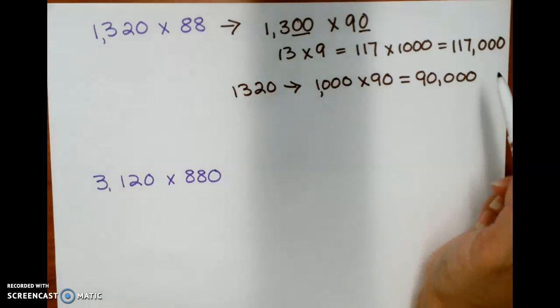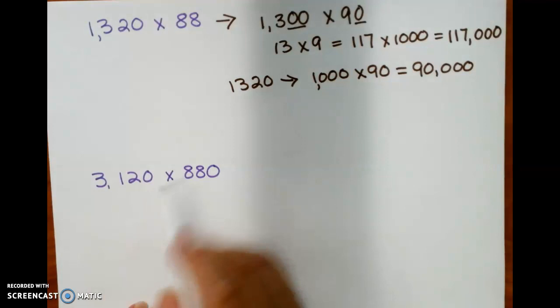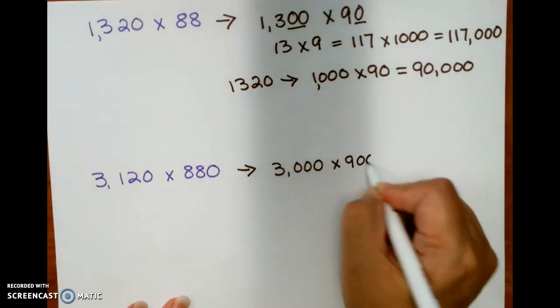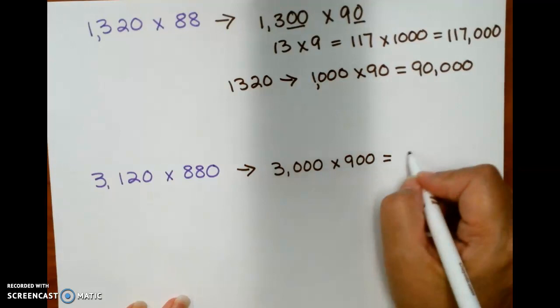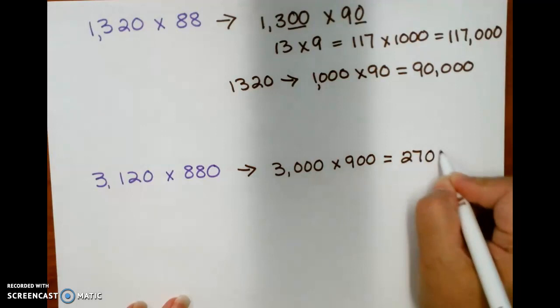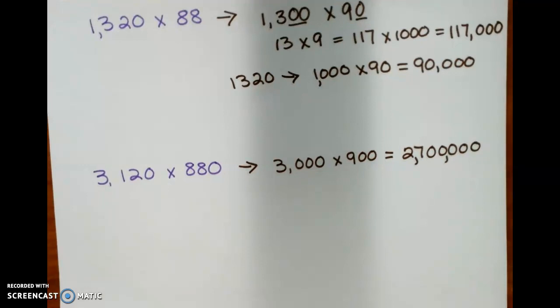Now, if I take 3,120, I can round that to 3,000. 880, I'll round to 900. So 9 times 3 is 27, and then 100 times 1,000 is 100,000. So my answer is 2,700,000.